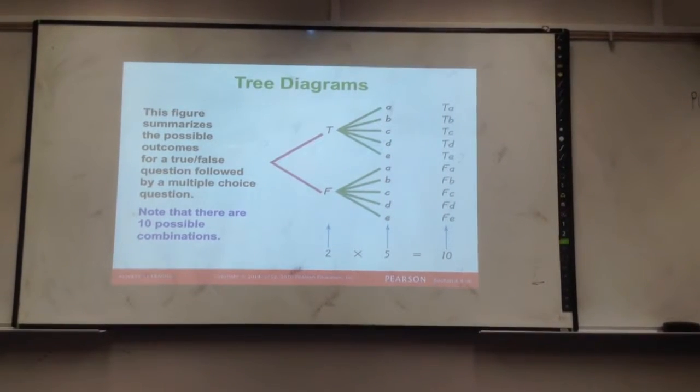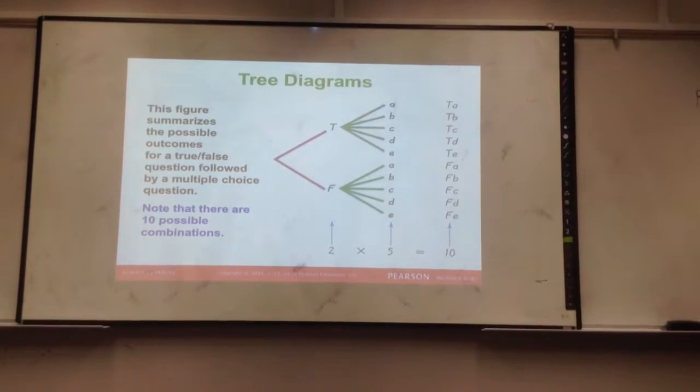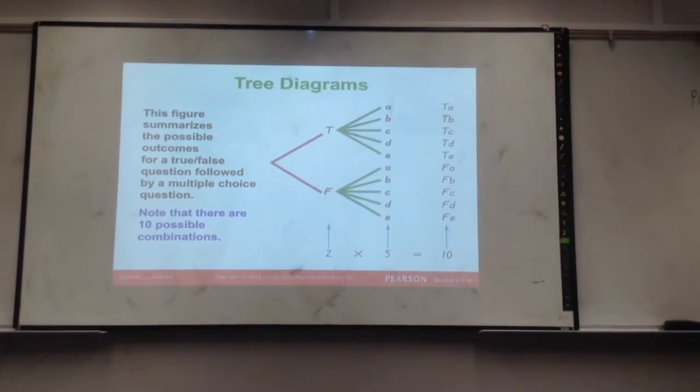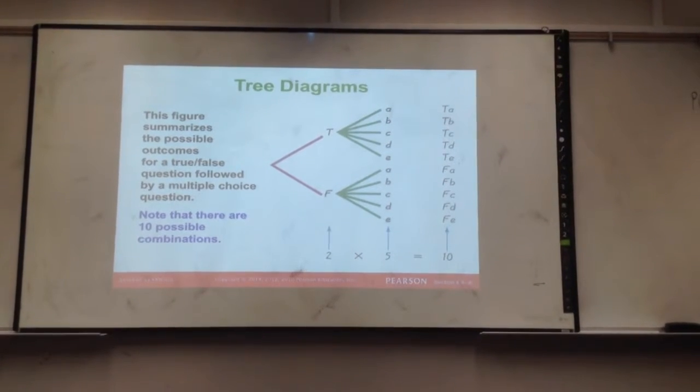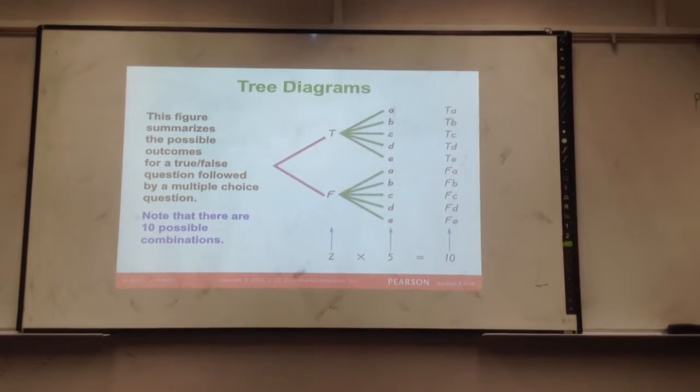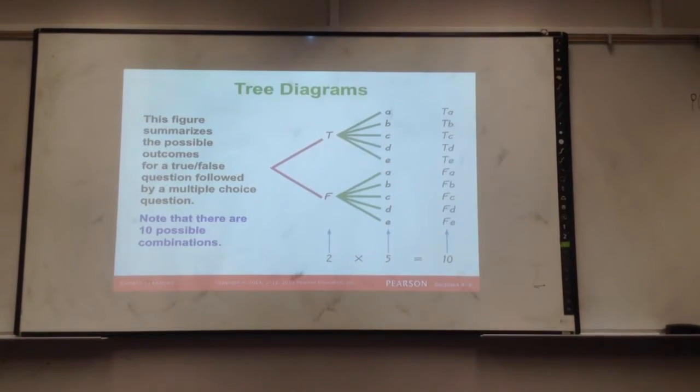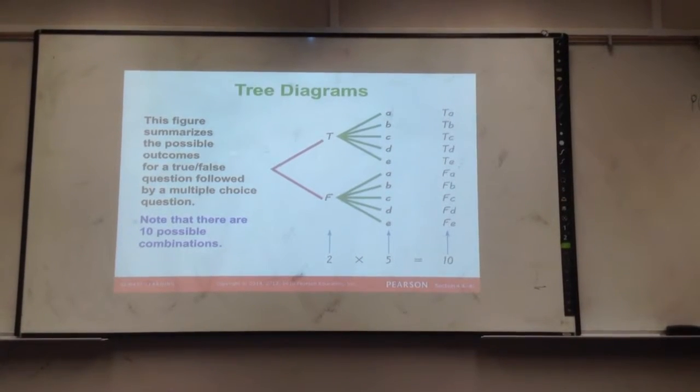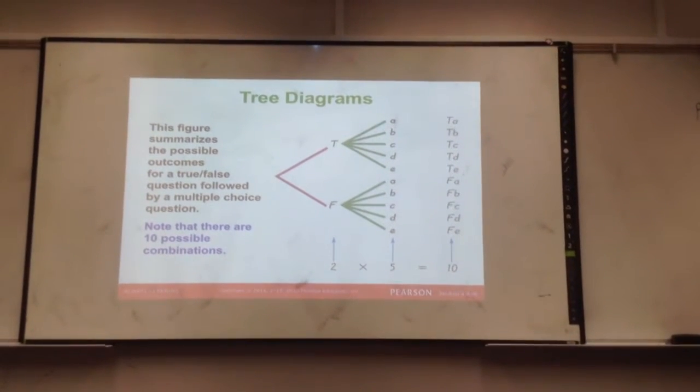So let's say this figure summarizes the possible outcome for a true-false, followed by multiple-choice. So true-false, the first question is the true-false. It has only two answers, and multiple-choice has a possible five answers. And they're totally independent, right?